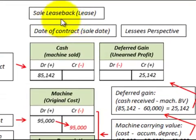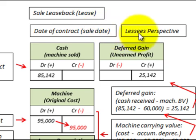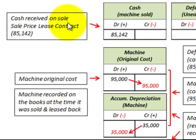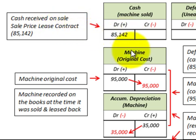Now let's look at the sale-leaseback at the date of the contract from the lessee's perspective. First, we would debit cash for $85,142 — that's the cash received on the sale, which is the sales price of the lease contract.